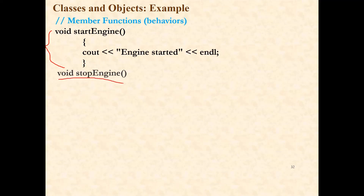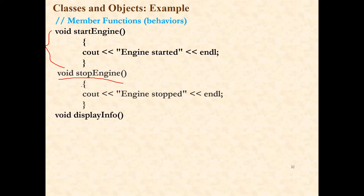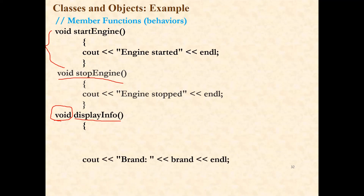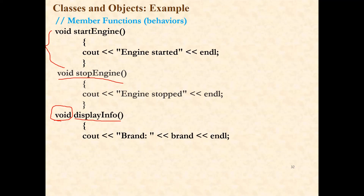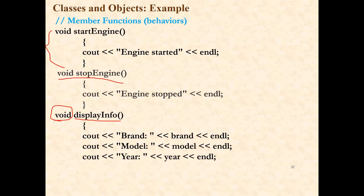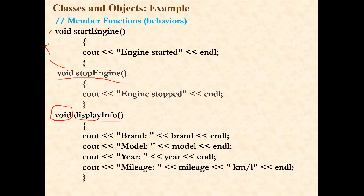Then the next member function: we will declare the stop_engine member function, whose return type is void. With the curly bracket, we start defining the member function. Inside this, we will just display one message with the help of cout, and that message is 'engine stopped'. The third member function is display_info — this is the name of the display_info member function, and void is its return type. With the opening curly bracket, we start the definition of the display_info member function. We will display the brand, model, and year of make of that particular car. These member functions are used just to display information and messages.